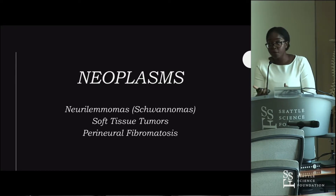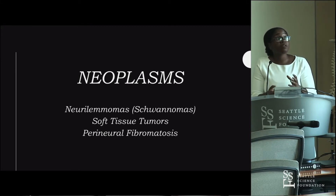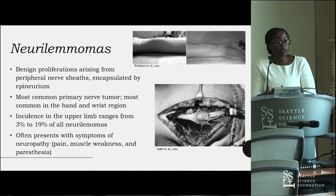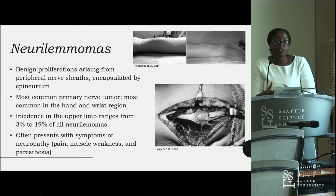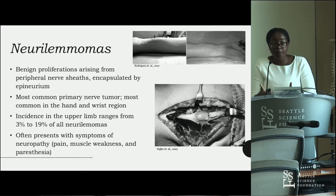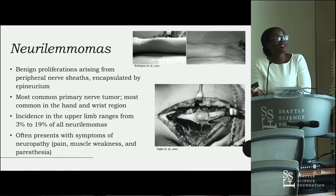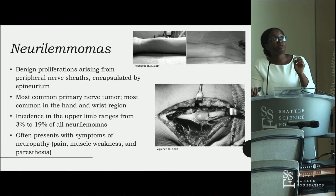The most prevalent neoplasm in the forearm is neurolemmoma or schwannoma. These are benign proliferations of the nerve sheath, usually encapsulated by epineurium and therefore separate from the nerve itself. It is the most common primary nerve tumor and arises most commonly in the hand and wrist region. It often presents with symptoms of neuropathy — pain, paresthesia, and muscle weakness. The upper picture shows a dilation on the arm that is a neurolemmoma, and the bottom picture shows a dissected forearm with the neurolemmoma visible within the ulnar nerve.